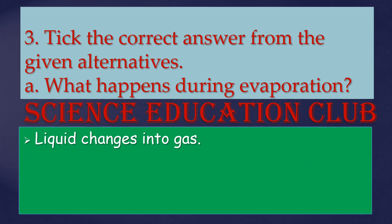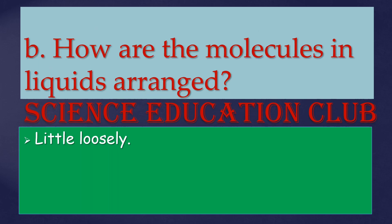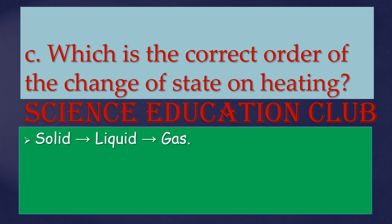Take the correct answer from the given alternatives. What happens during evaporation? The correct answer is: liquid changes into gas. How are the molecules in liquid arranged? Little loosely. Which is the correct order of change of state on heating? Solid, liquid, gas.